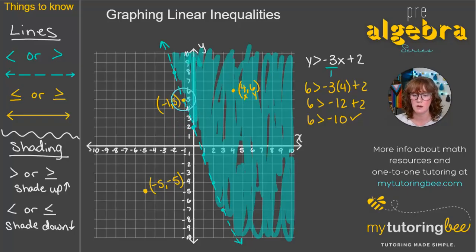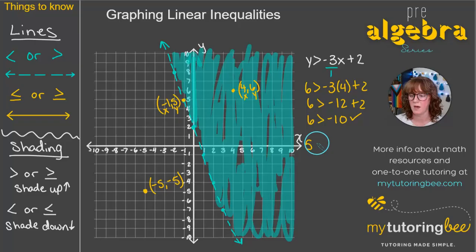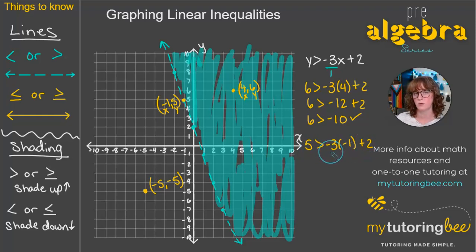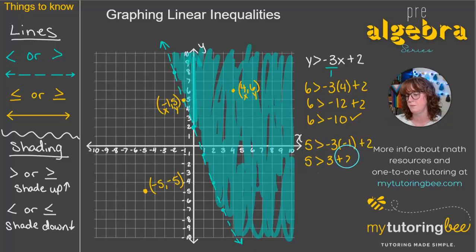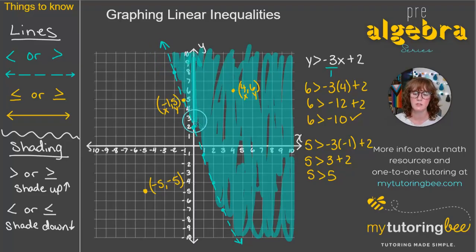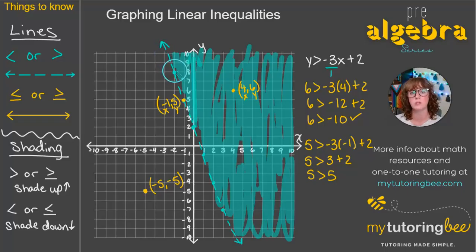For point (-1, 5): y is 5, x is negative 1. Substituting into the original inequality: 5 is greater than negative 3 times negative 1 plus 2. Negative 3 times negative 1 is positive 3, plus 2 is 5. So 5 is greater than 5 — that's not exactly true. This confirms why the dashed line is just the boundary; it's what solutions go up to, but it doesn't include any points on that line.